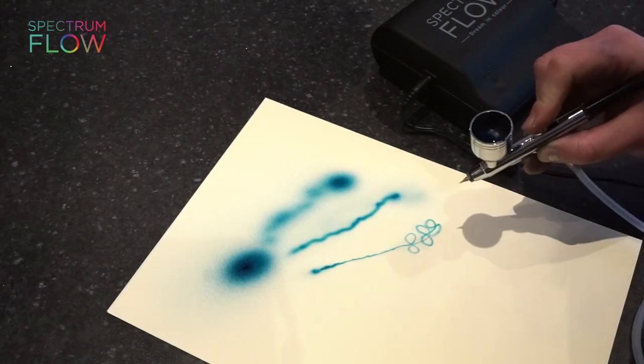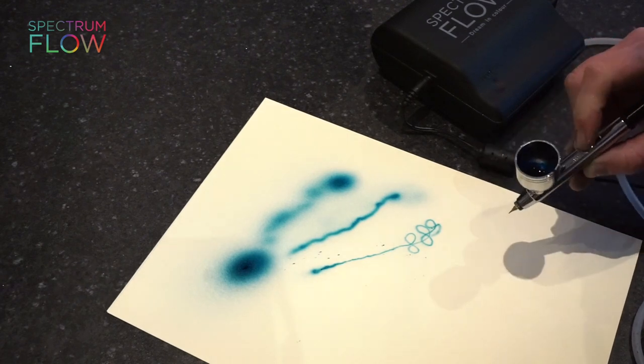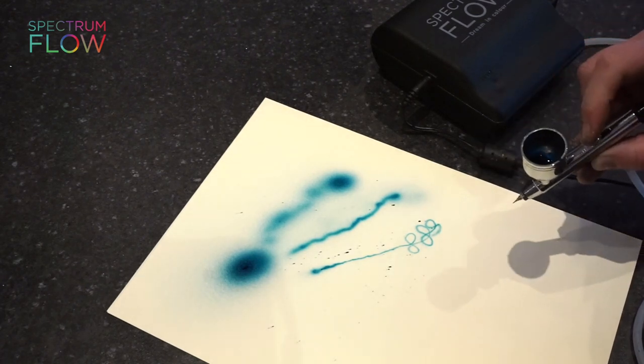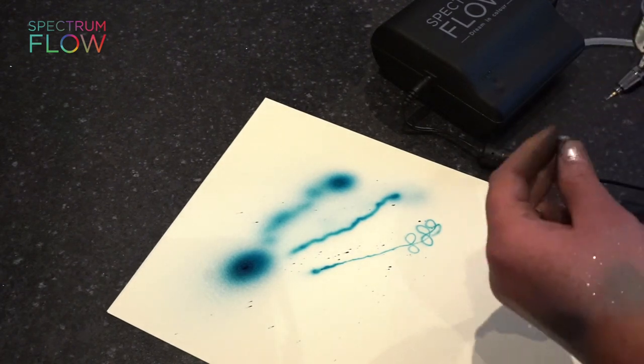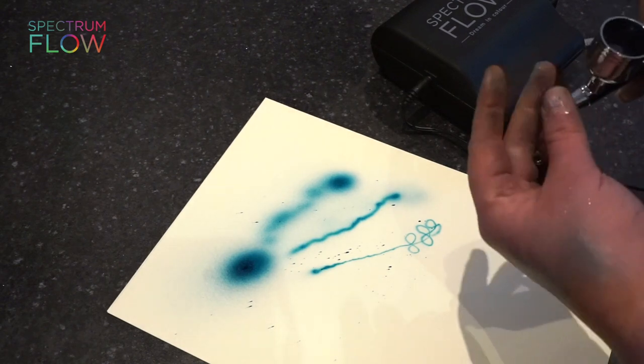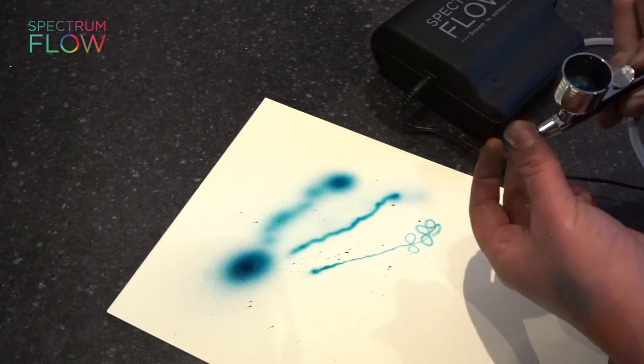you can then flick your airbrush and get like a spotty effect. So it's great for stones or adding just little spots onto whatever you're airbrushing. And put them back on.